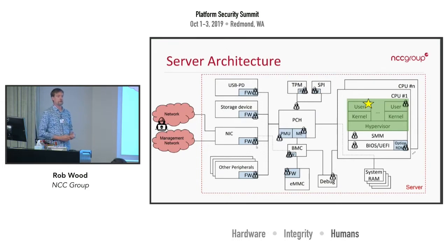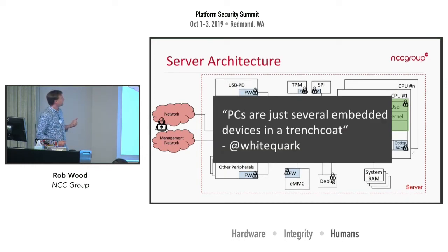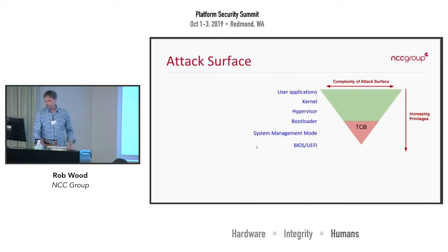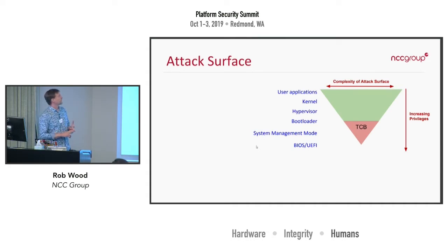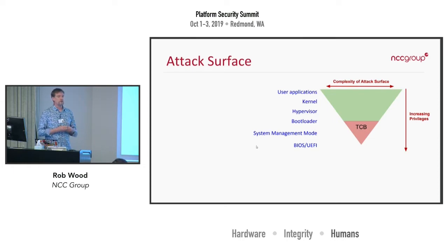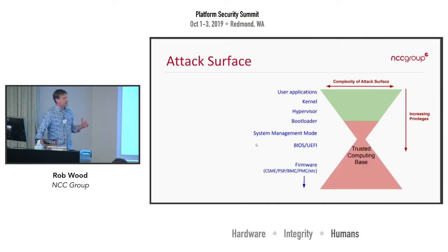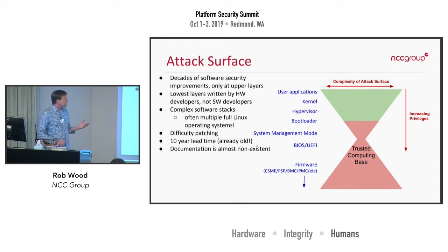There's a design philosophy I like where as you get more and more privileged in your system, you have a smaller and smaller attack surface — you don't run your web browser in your kernel. But further down, we've got all of these other firmware bits which are even more privileged, and the attack surface actually increases. When we get down here, you get this troublesome hourglass, I call it, and it happens for a number of reasons.